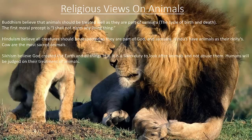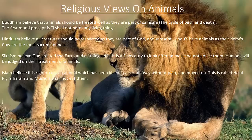Sikhism — God created the earth and all things in it. It is a Sikh's duty to look after animals and not abuse them. Humans would be judged on their treatment of animals. Islam — it is right to eat an animal which has been killed in a certain way, without pain, and prayed over. This is called Halal. Pig is Haram and Muslims shall not eat it.